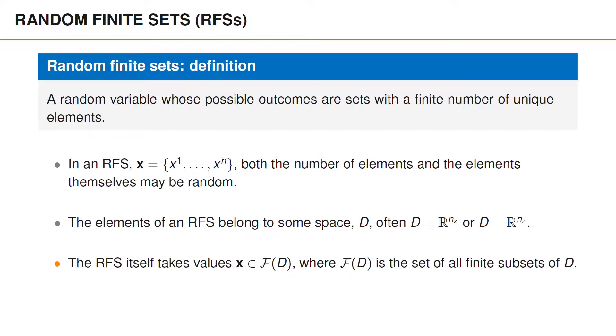Interestingly, the outcomes of the random finite set itself takes values in a more complicated set, f, that contains the set of all finite subsets of D. Let's look at some examples to make this more concrete.